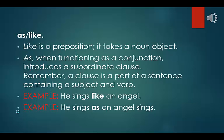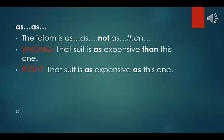As vs. like: like is a preposition — it takes a noun object. As, when functioning as a conjunction, introduces a subordinate clause. Example: he sings like an angel. Example: he sings as an angel sings. Note that the idiom is 'as...as,' not 'as...than.' Wrong: that suit is as expensive than this one. Right: that suit is as expensive as this one.